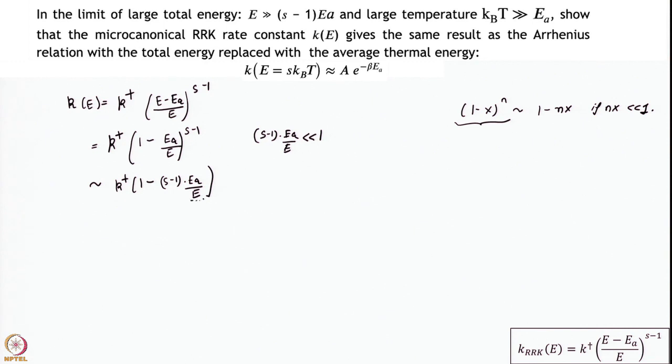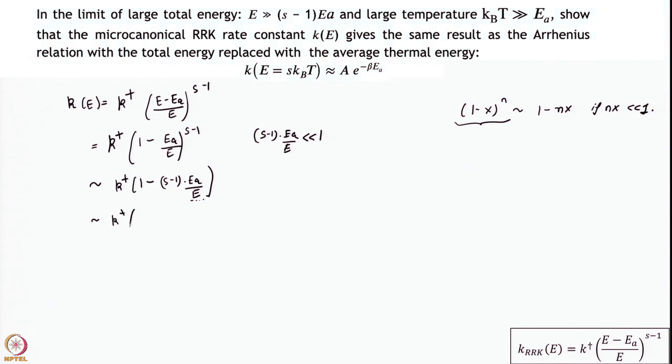Now I replace the energy with thermal energy. I assume a large system with many oscillators. By the equipartition theorem, each harmonic oscillator has kT of energy, so with s oscillators I have roughly s·kT of energy. Since s is a large number, s and s−1 are approximately equal and cancel. So I get something like K† times (1 − Ea/kT).